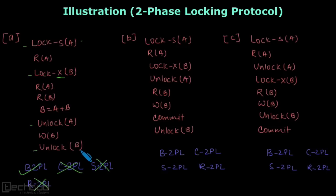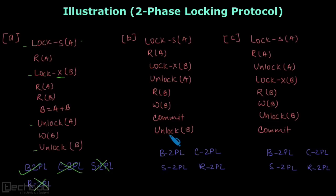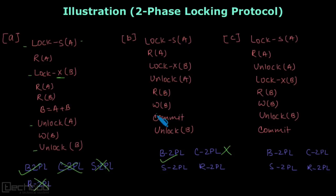Now let's look at the second example, transaction B. It has a growing and shrinking phase — once unlocking starts there is no new lock — so it is basic 2PL. For conservative 2PL, no, because not all the locks are acquired at once before the transaction starts.